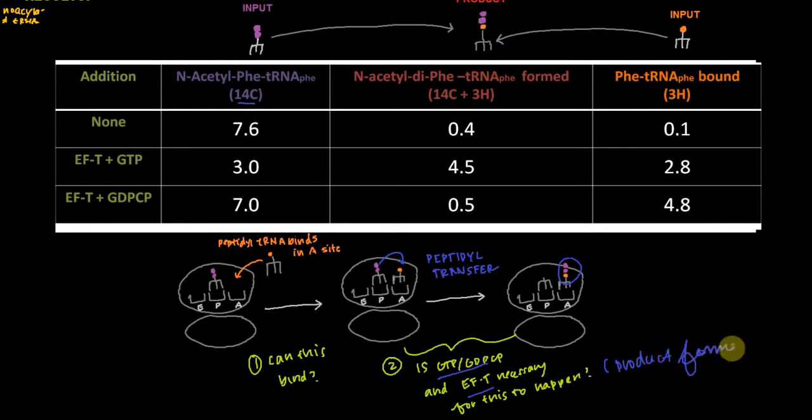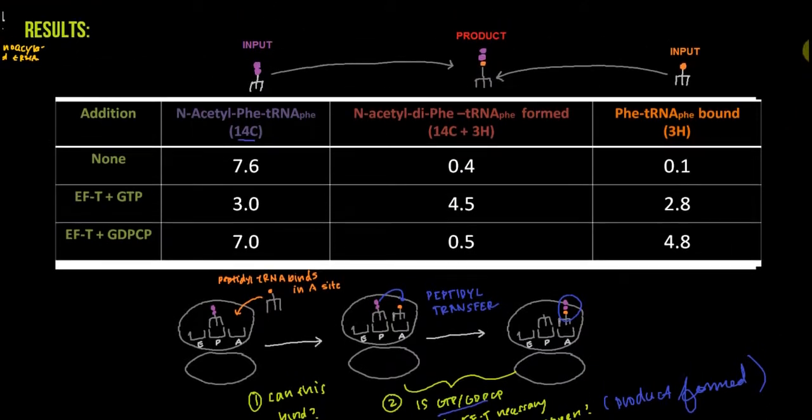Now that we have the setup, let's see what the results are. We've got row one, two, and three, and I'll go over each in turn. Now you understand how this product is formed, but you can't infer all the things I just told you, especially with regards to the sites, because we're only looking at whether it's on the ribosome or not. We have no information about where it's binding, but this is just what's going on so you have some context.